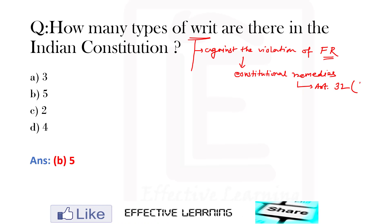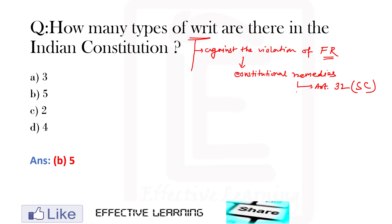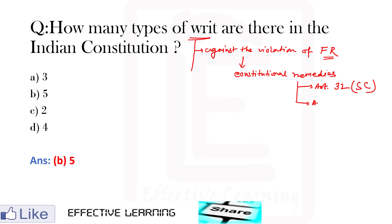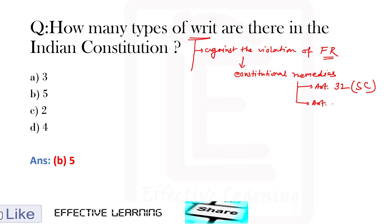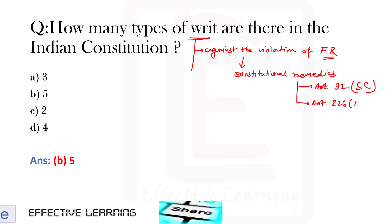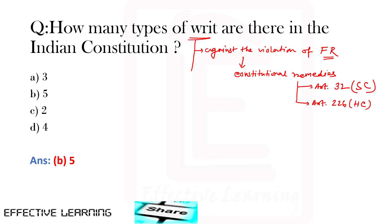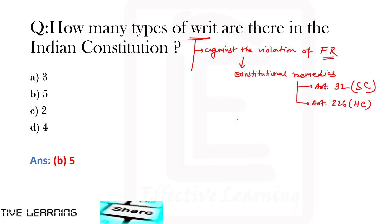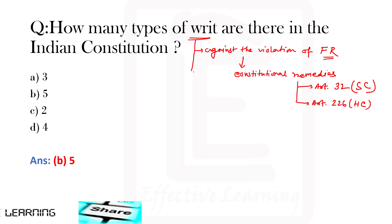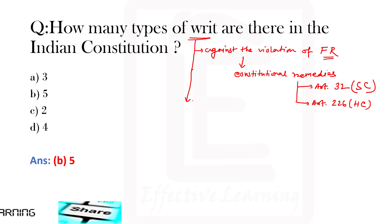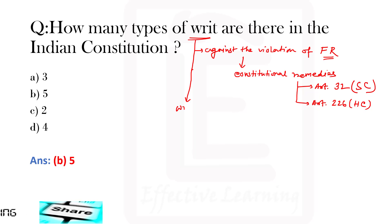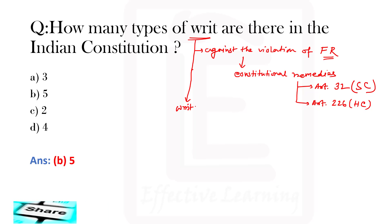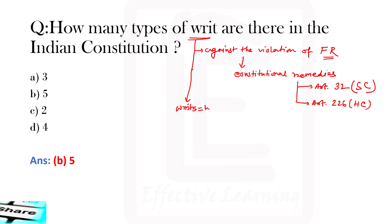The constitutional remedies are available under Article 32 in the Supreme Court. Constitutional remedies are also available under Article 226 in the High Court. If you file a writ petition under Article 32, you approach the Supreme Court.